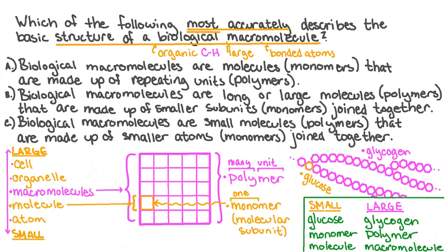So each of these pairs of terms has the same relationship. Glycogen is made of glucose. Polymers are made of monomers. And macromolecules are made of molecules. Now let's go back to our answer choices. Our first choice says that monomers are made up of polymers. But we know that monomer is one unit and polymer is many. So this answer choice is incorrect.